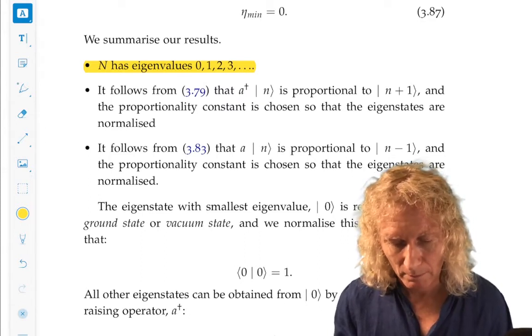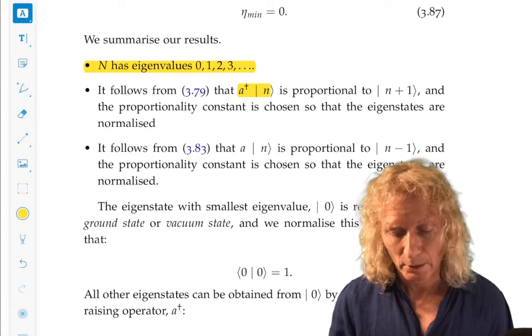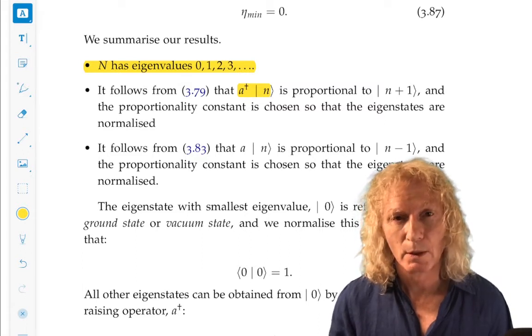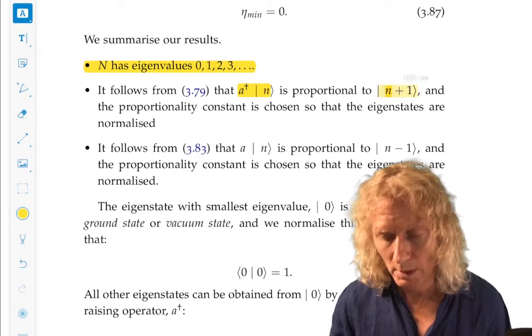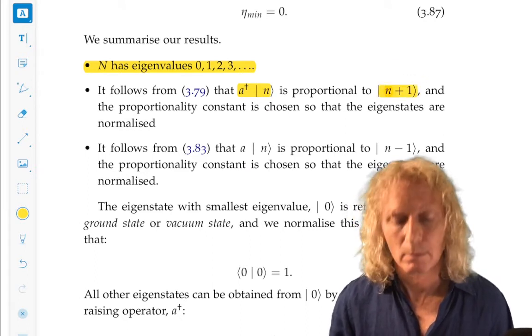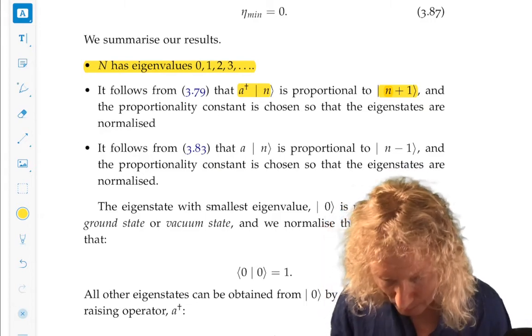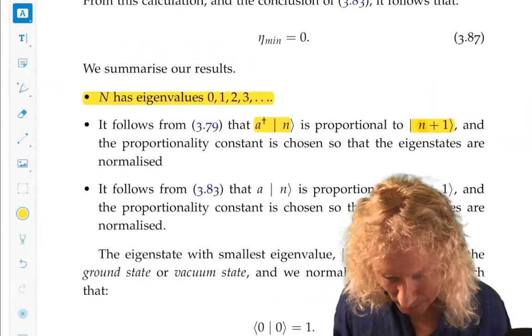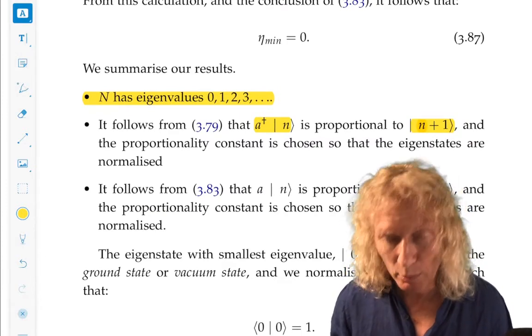It follows from the calculation we did that a dagger acting on ket eta is proportional to ket, so not n, I'm denoting the eigenvalues by n now, n plus one.